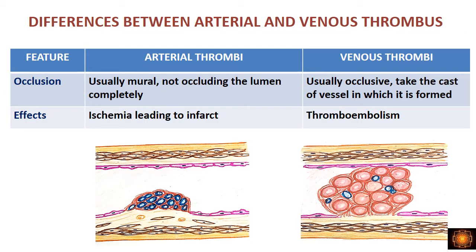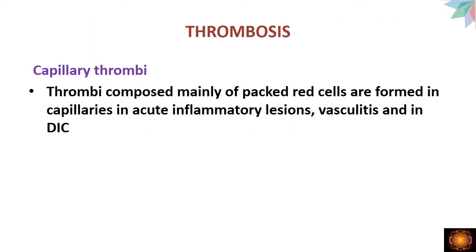Regarding effects: arterial thrombi usually don't cause occlusion in initial stages — they are firmly attached to the wall, usually mural, not completely occluding the lumen. But as they grow, they cause deficiency of blood supply leading to ischemia and infarction. Venous thrombi, composed mainly of RBCs, are usually occlusive — they grow to a larger size, take the cast of the vessel, and being loosely attached to the vessel wall, they can detach and cause thromboembolism.